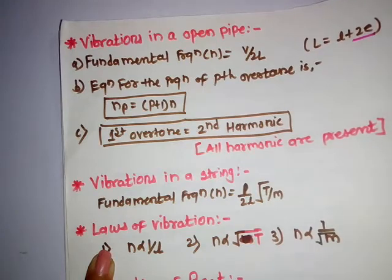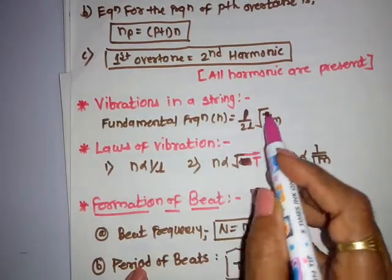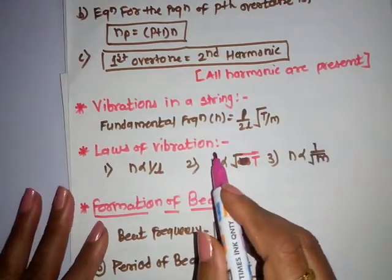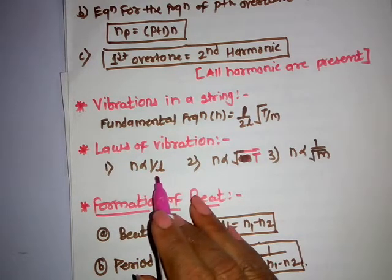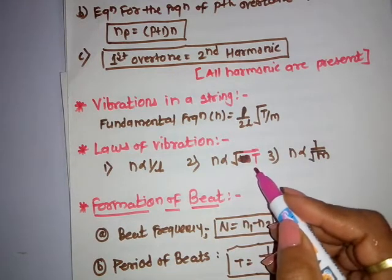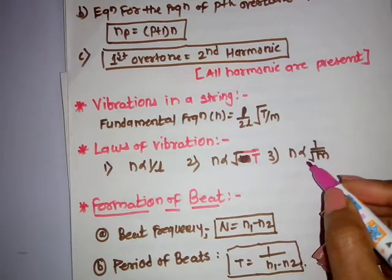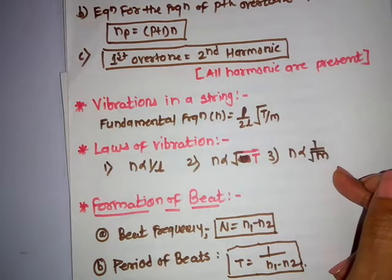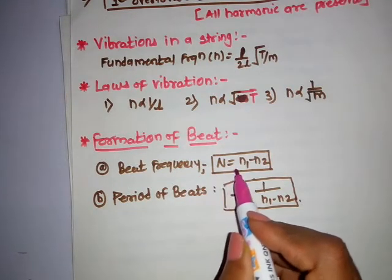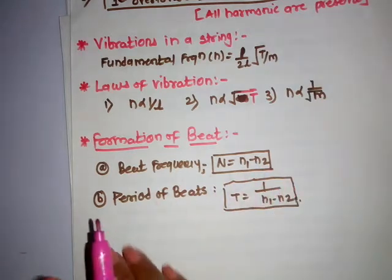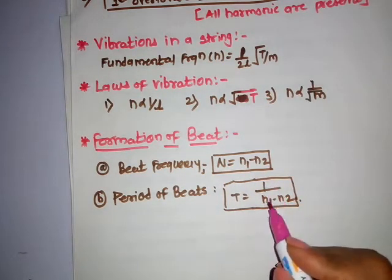For vibrations in a string, the fundamental frequency is n = (1/2L)√(T/m). There are three laws of vibrations: first, the law of length (n is inversely proportional to L); second, the law of tension (n is directly proportional to √T); and third, the law of linear density (n is inversely proportional to √m). For beats, the beat frequency is N = n₁ - n₂, and the period of a beat is T = 1/(n₁ - n₂).